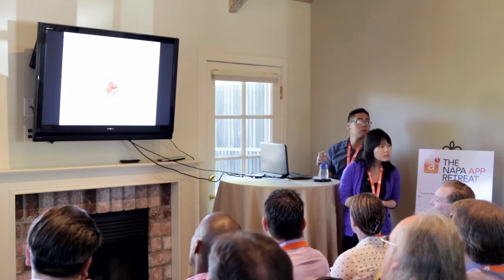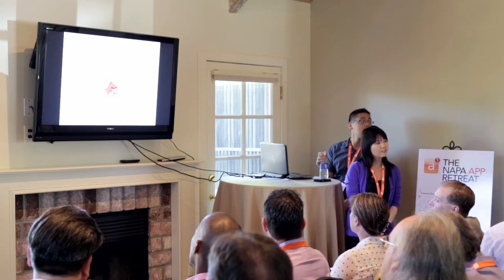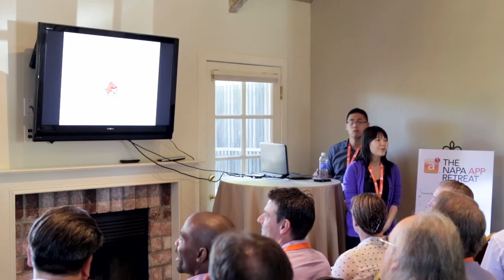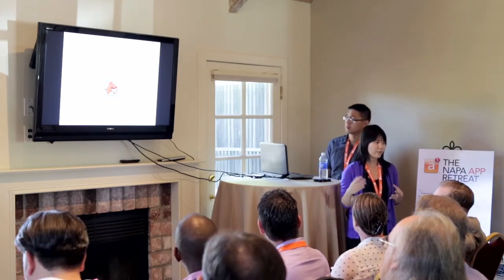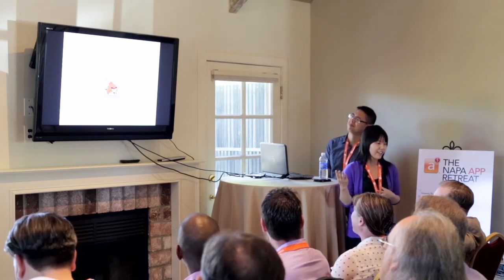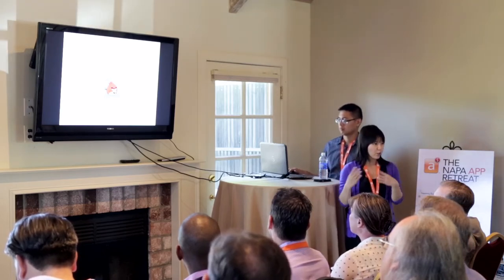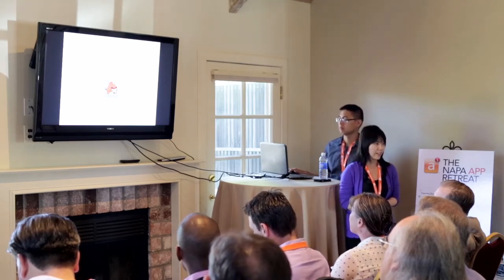We do struggle a bit with what you might call the snarkiness problem — sarcasm is hard to detect. Things like people saying 'it was a great app, not.' But a lot of that is reflected in the ultimate star review. Someone who says 'it's a great app, not' normally isn't giving a five-star review. So we try to correlate the two to guess at the true meaning of what the user is trying to say.